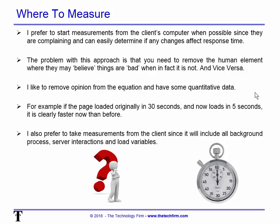The problem with working with the client is that you need to remove that human element — their perception. When they believe things are bad and slow, when in fact it's not. I always joke that the Friday before the long weekend, everybody can swear things are way too slow because they're trying to get out of work. I also want to remove opinion from the equation. I want quantitative data, some numbers — not 'I think,' but 10, 20, 50, whatever the number happens to be.